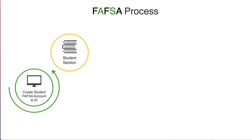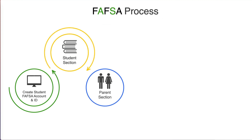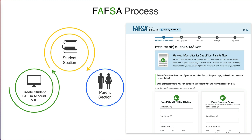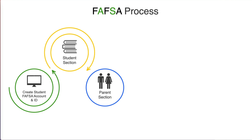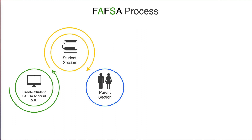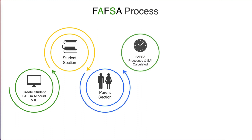During the filling out of the student section, you will need to send an invite to the parent or guardians so that they can complete their demographic and financial information, including information from their tax returns. Once both sections are completed,